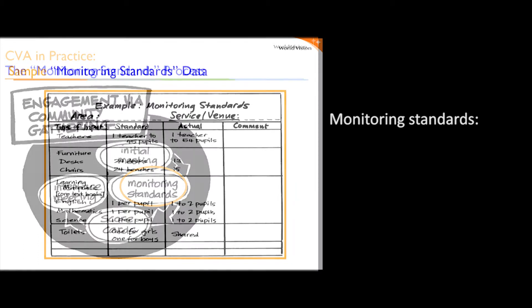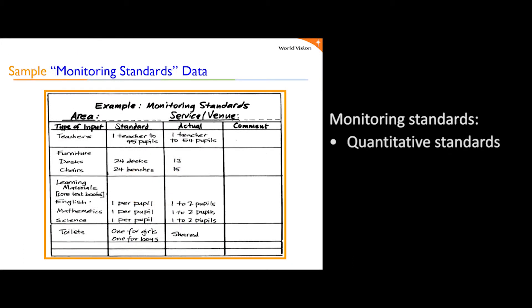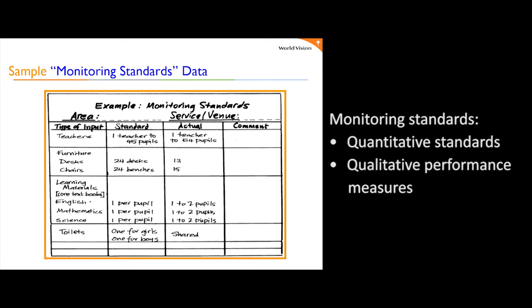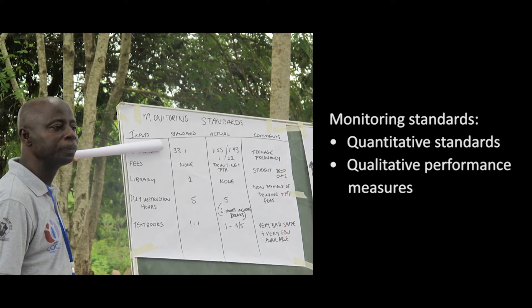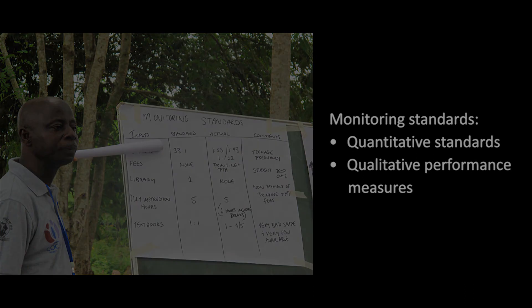World Vision generally uses quantitative standards, which are easier to measure. But it is also important to monitor qualitative performance measures, which can be developed by the community — for example, through the citizen voice and action scorecard process, which will be presented in detail in Unit 3 of this module.